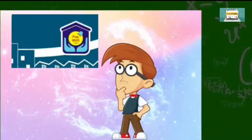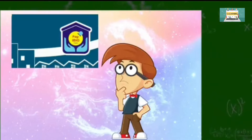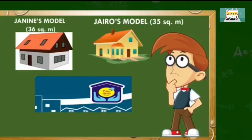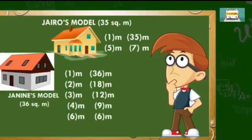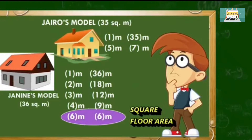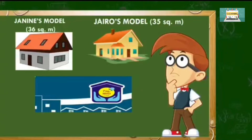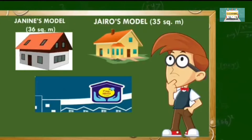Mr. Cruz went to Pag-ibig to avail a housing loan. He wanted to have a square floor area. Which model is best fit for his dream house — the Janine's model or Jairo's model? Help Mr. Cruz in finding the best house model for his preference by finding the possible dimensions of the houses by listing down the factors of each model. Janine's model is best fit for his dream house. That process is known as factoring. Just like the situation of Mr. Cruz, he wanted to know the possible dimensions offered for model houses. The process used will be finding the factors of the area.